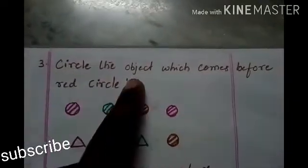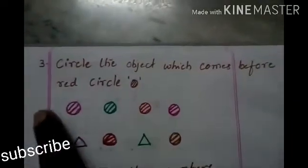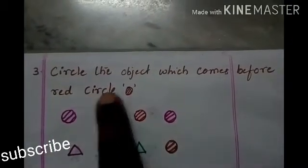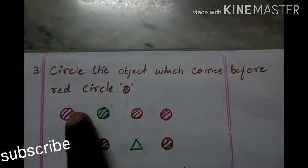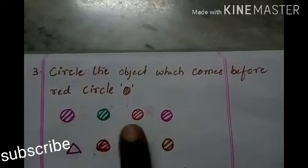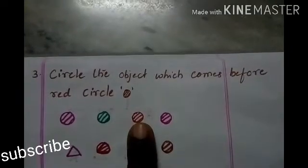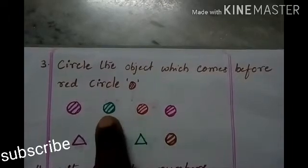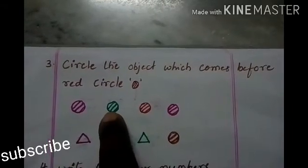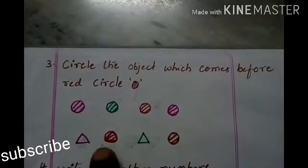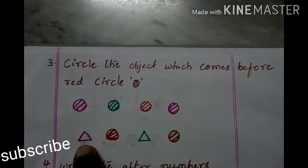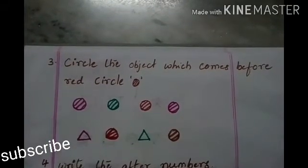Circle the object which comes before the red circle. Before the red circle, what comes? We have to see. Where is the red circle? Which is the red color? This is the red color. Then which shape came before the red circle? It is the green circle. Here where is the red circle? This is the red circle — then what came? It is pink triangle.